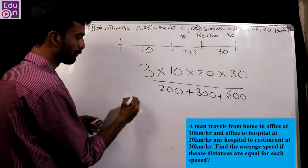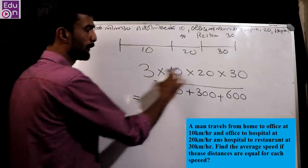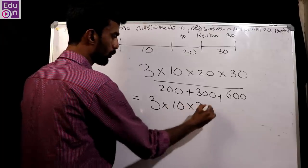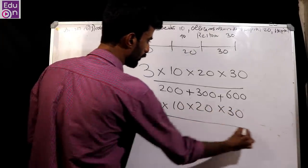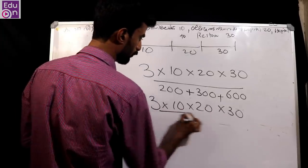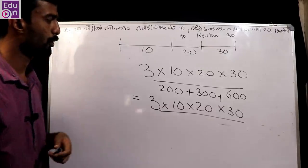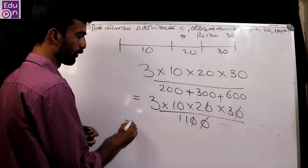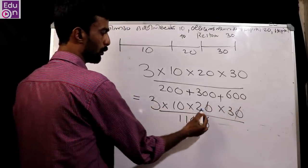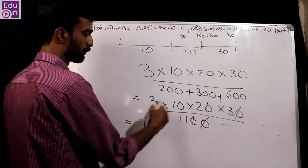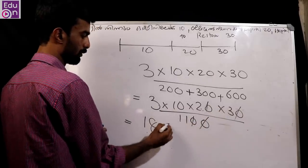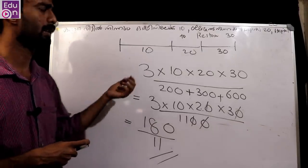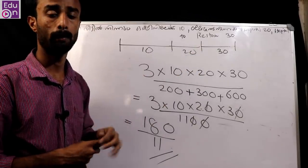So we will give the answer — we will multiply and get the total. 3 × 10 × 20 × 30, we will get the answer. The answer is 18 — out of 180 by 10.